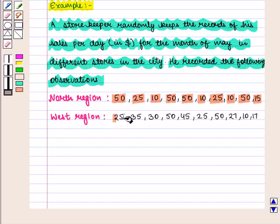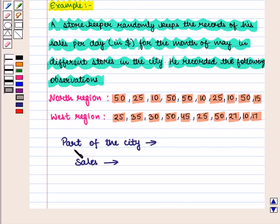And in the west region, the sales are 25, 35, 30, 50, 45, 25, 50, 27, 10, and 17 dollars. Here part of the city is the qualitative variable and sales is the quantitative variable.